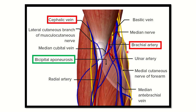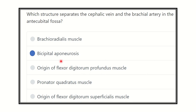Here we can see the cephalic vein and the brachial artery. Between the cephalic vein and the brachial artery, the separating structure is the bicipital aponeurosis. The cephalic vein is separated from the brachial artery by this fascial structure — the bicipital aponeurosis. So our final answer is the bicipital aponeurosis, which separates the cephalic vein from the brachial artery at the antecubital fossa. Thank you.